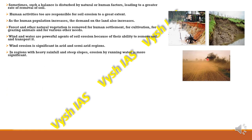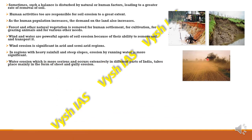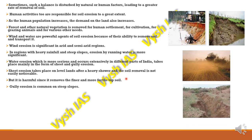In regions with heavy rainfall and steep slopes, erosion by running water is more significant. Water erosion, which is more serious and widespread in India, takes place mainly in the form of sheet and gully erosion. Sheet erosion takes place on level lands after heavy showers — the soil removal is gradual and almost unnoticeable, but over time a huge amount of fertile topsoil is displaced. Gully erosion is common on steep slopes.